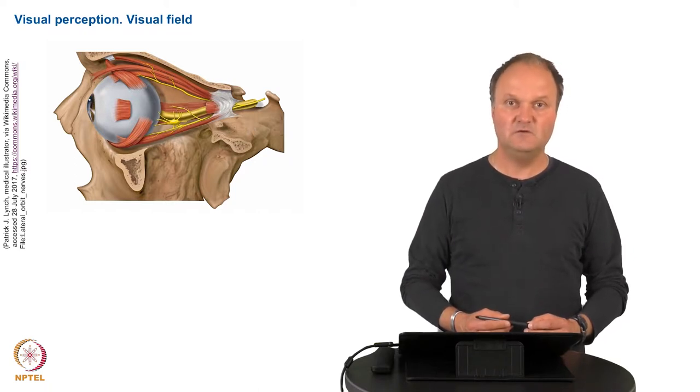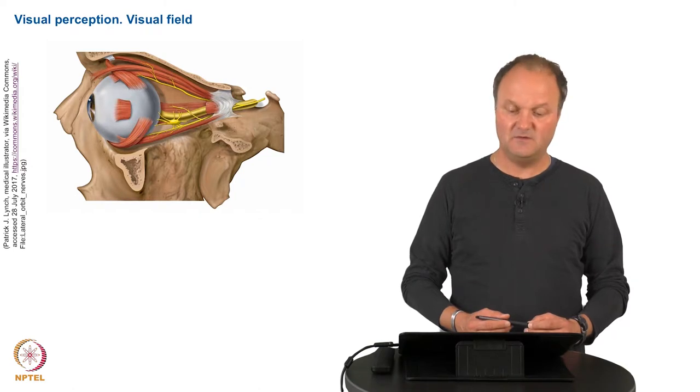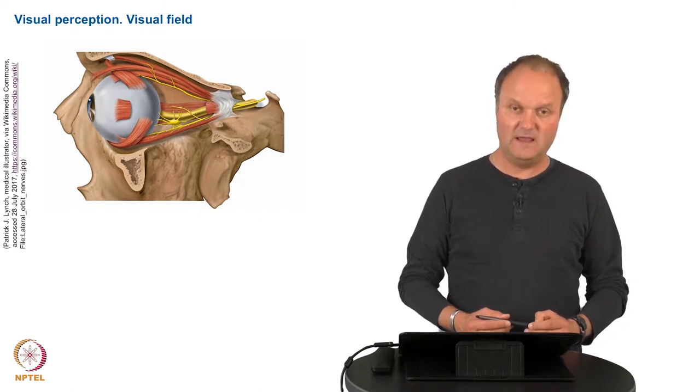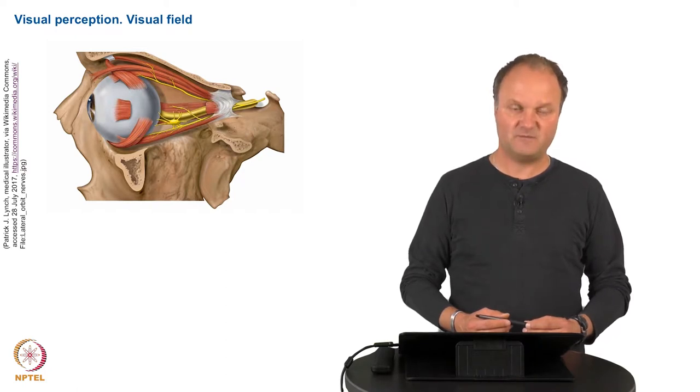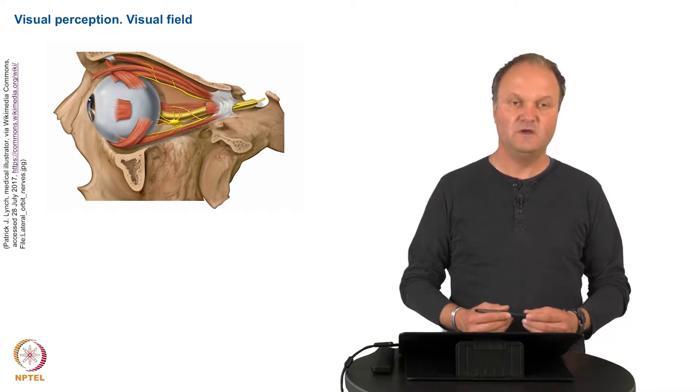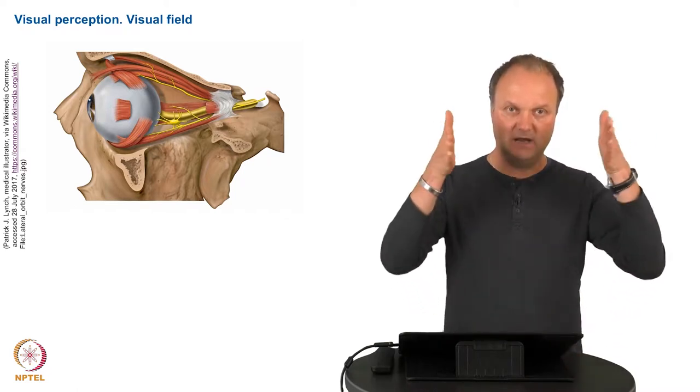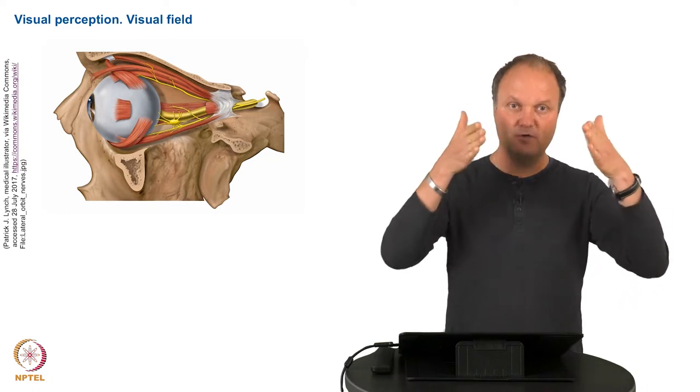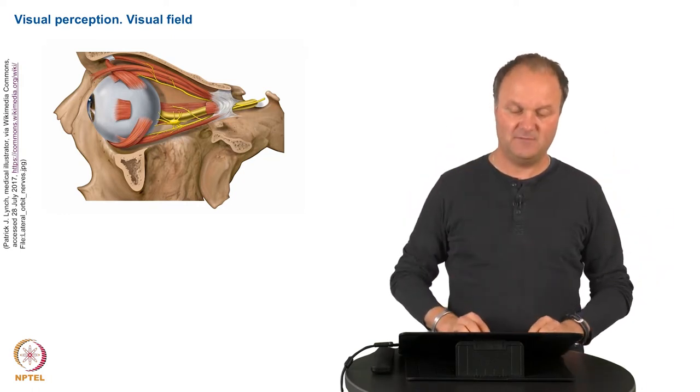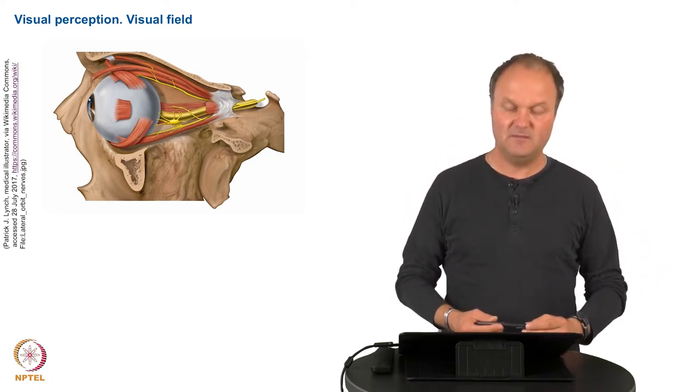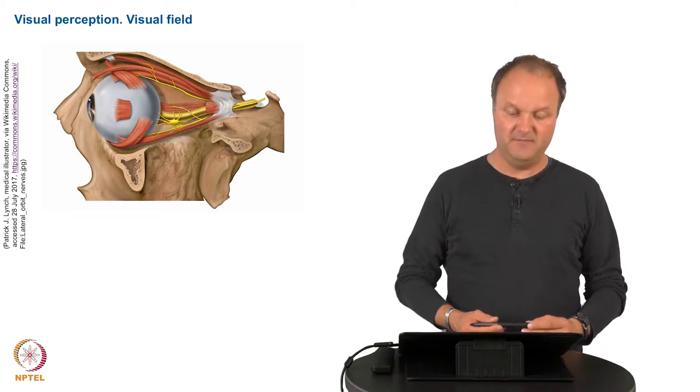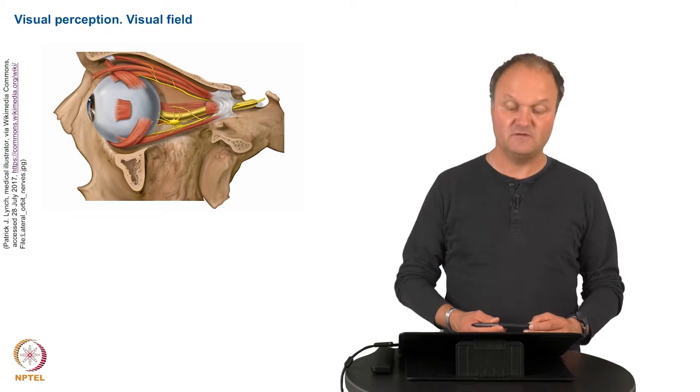These fixations have a duration of approximately two to three seconds and they help us in scanning the environment. So what we are continuously doing is we scan the environment with our eyes in a way that both eyes produce a sharp picture on their respective retina. We will come back to this process a little bit later when we talk about depth perception. This process is called convergence or vergence.